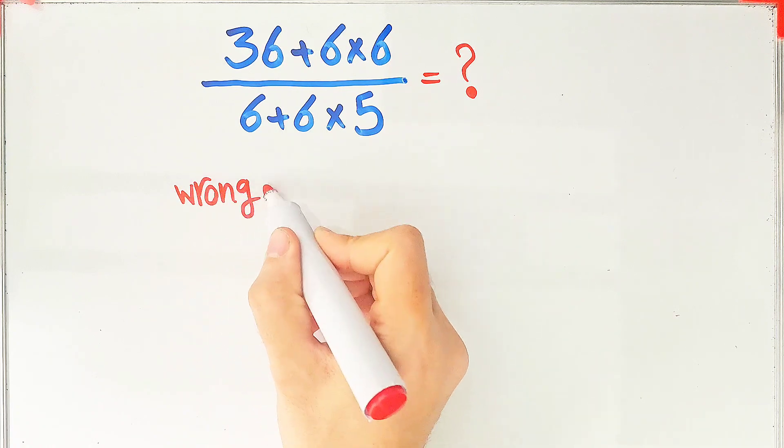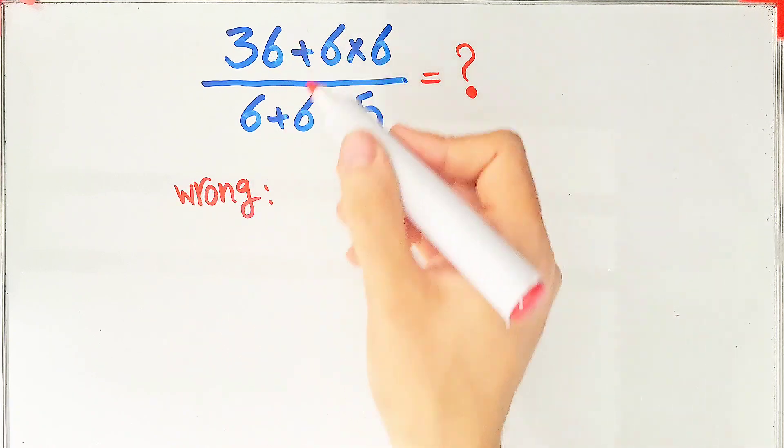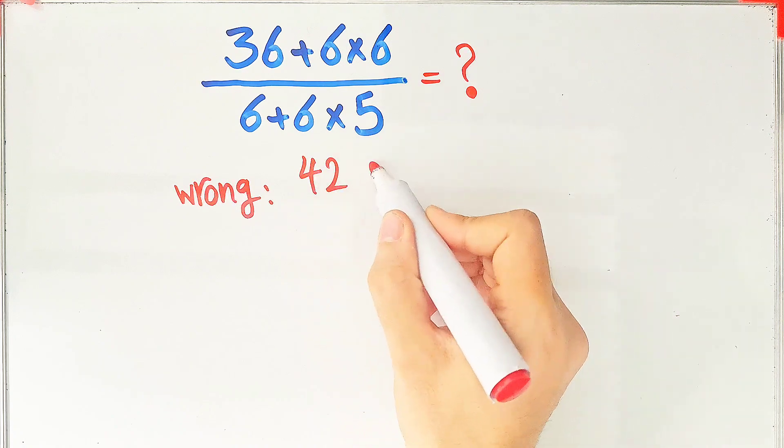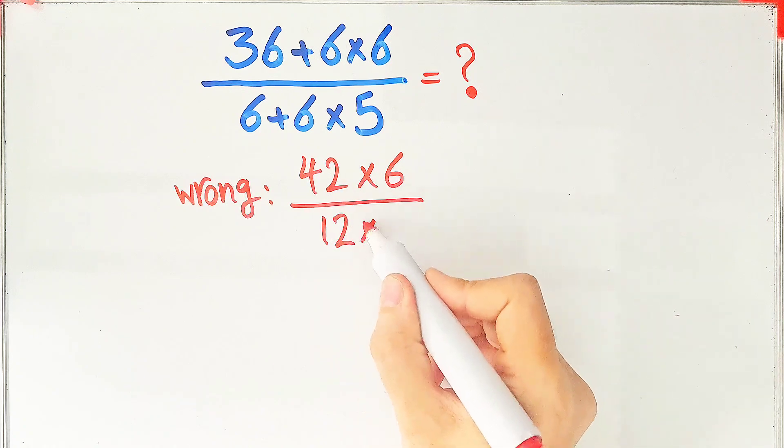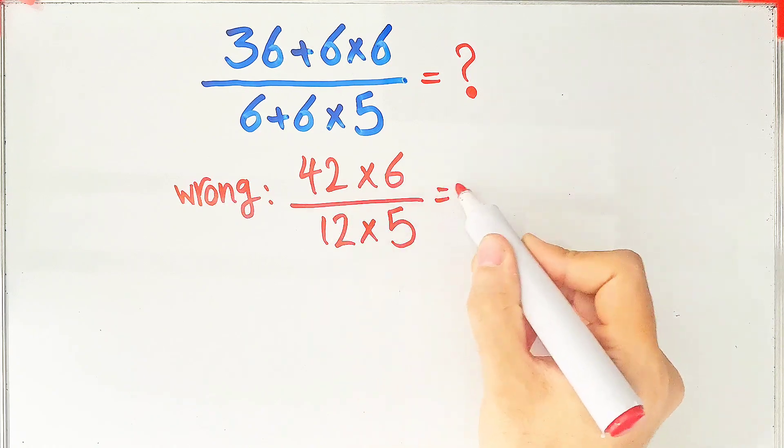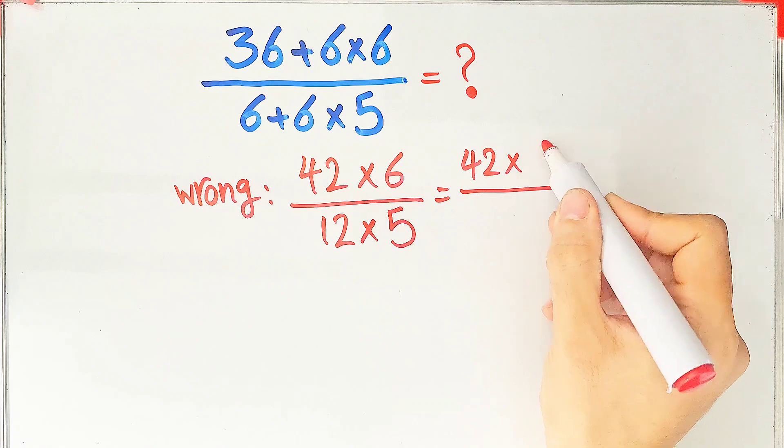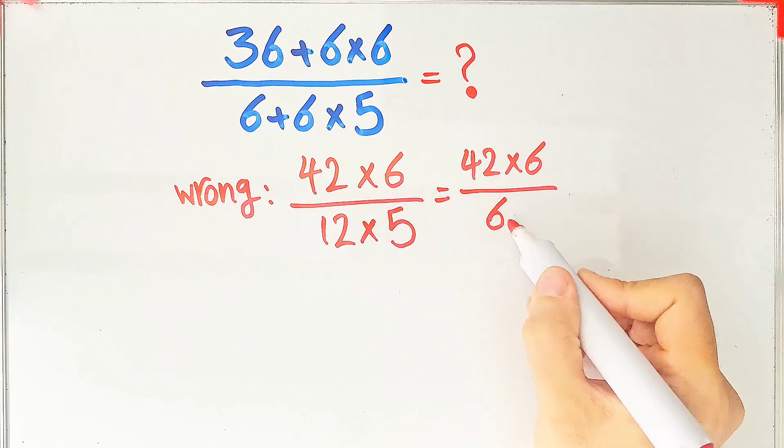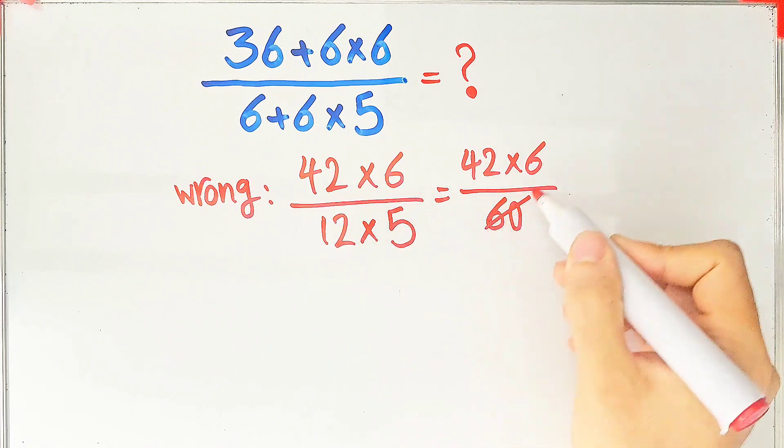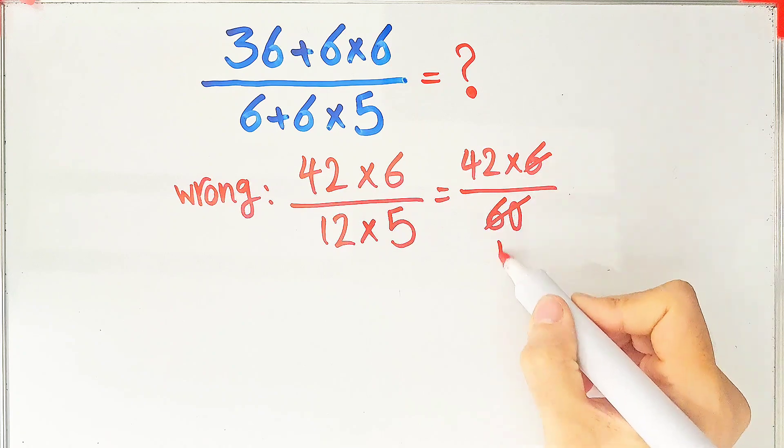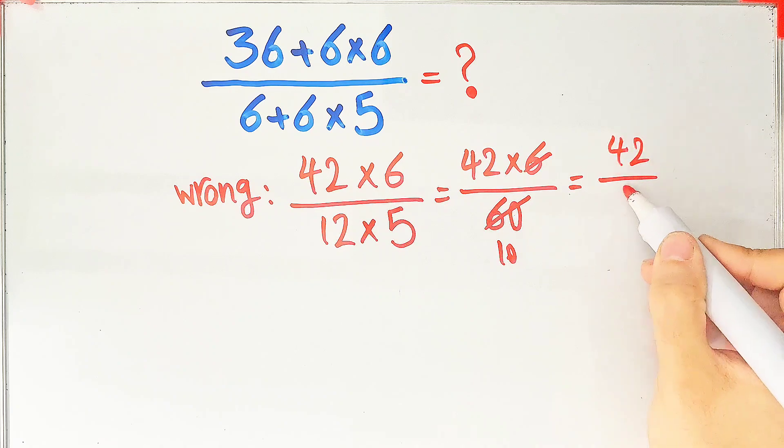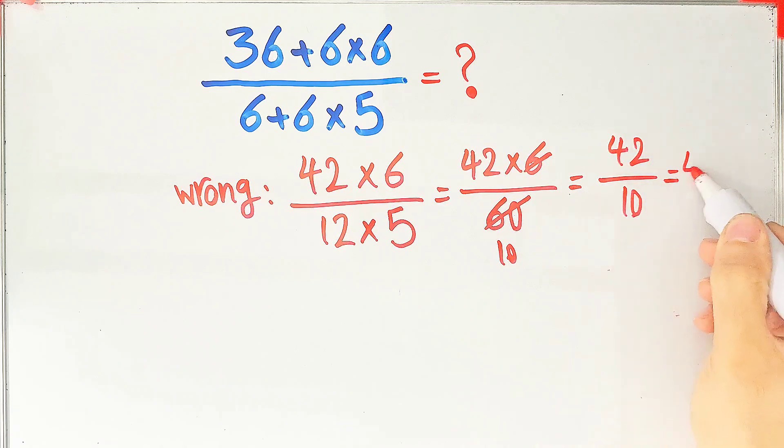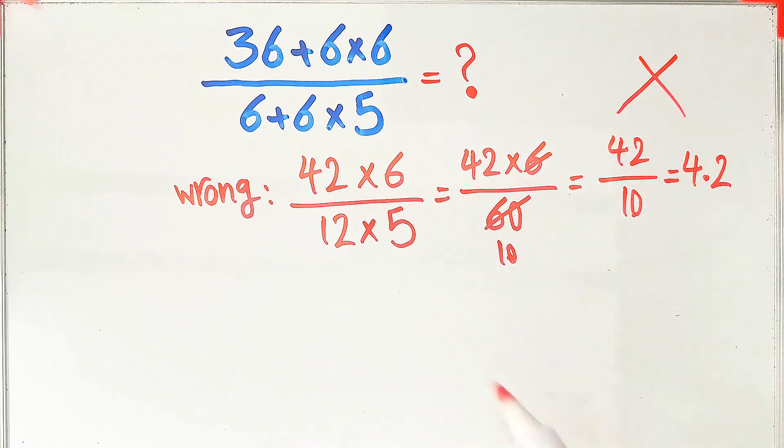some people solve this question like this: 36 plus 6 equals 42, 42 times 6 in the numerator, and in the denominator 12 times 5. In the numerator, they have 42 times 6, and in the denominator they have 12 times 5, which equals 60. They divided 6 and 60 by 6, and they say the final answer of this question equals 42 divided by 10, which equals 4.2. But this answer is wrong.